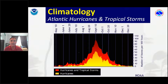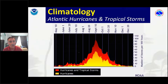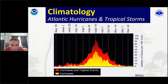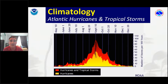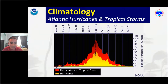Hurricane season, thankfully, is only half the year — June 1 to November 30th. Climatology shows a very pronounced peak during the season. Whether you look at hurricanes and tropical storms combined, or just hurricanes, the climatological peak occurs right around September 10th — which happens to be my wife's birthday, so she wonders why we never really get to celebrate it. The bulk of activity occurs in August, September, and into October, though storms have been observed into May and through November.